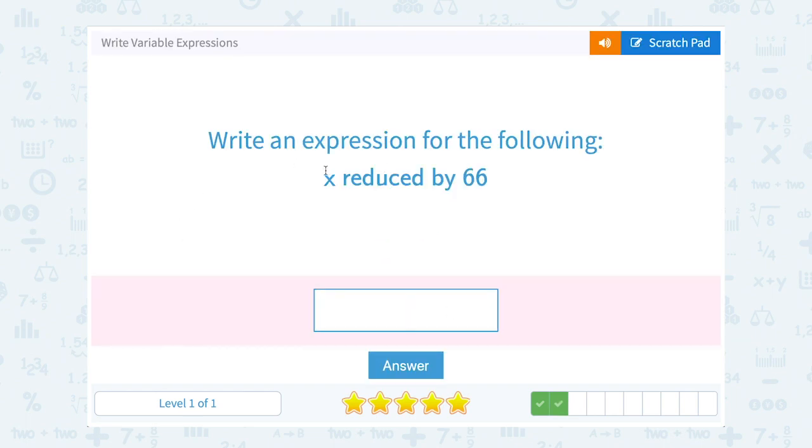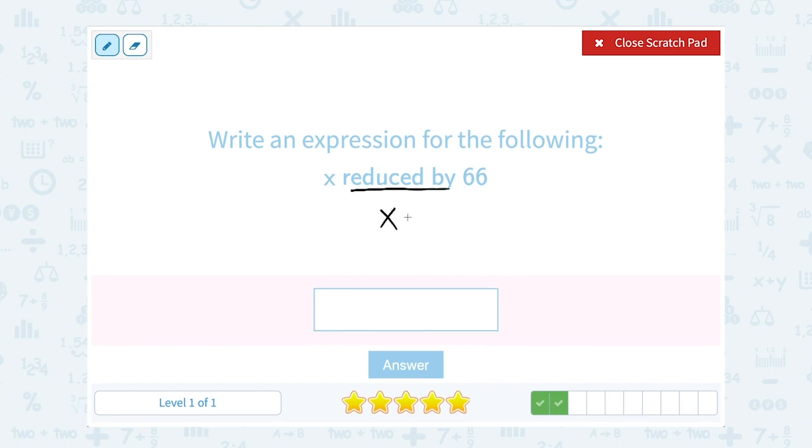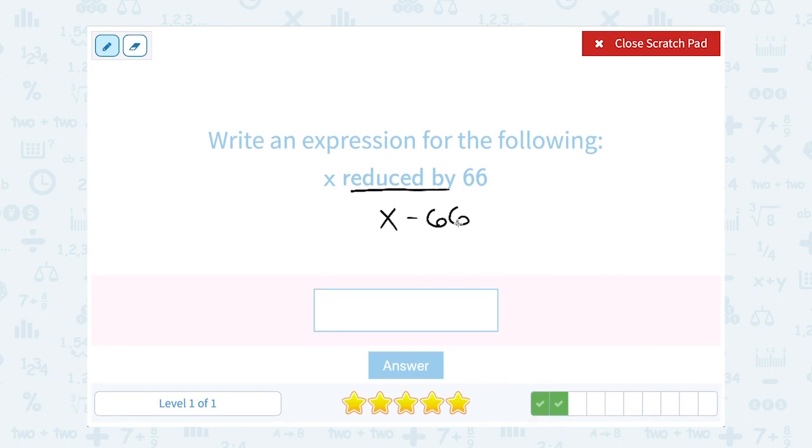66, or I'm sorry, x reduced by 66. Well, if x is being reduced, that means we're starting out with x, and then we're reducing or making it smaller by 66. So that means we would have to subtract 66 from our x.